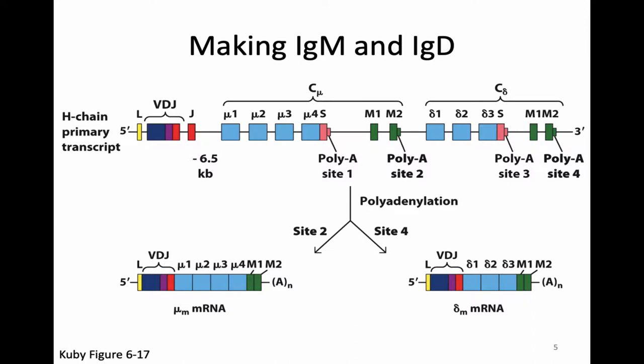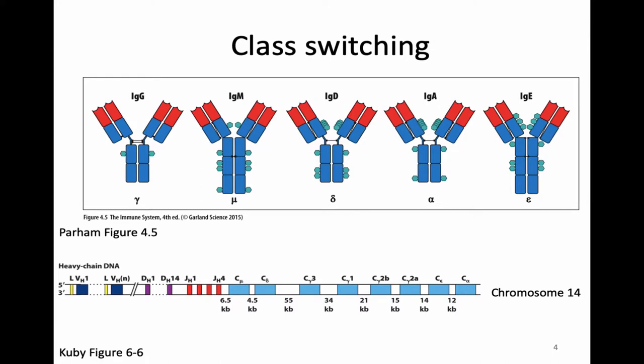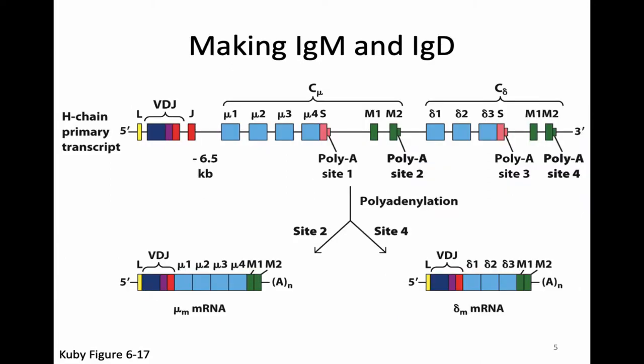Our developing B-cell will start out making IgM. But as you can see, when that cell leaves the bone marrow, it typically will be making both IgM and IgD. This is the only time during the life of the B-cell that it can make antibodies and B-cell receptors of more than one isotype. The IgM and IgD constant regions are the first two downstream of the VDJ regions, and there's a large gap of 55 kb before we get to another constant region. When the B-cell makes the transcript for the antibody gene, it's able to make a transcript that includes both the constant region exons for the mu heavy chain and the delta heavy chain.